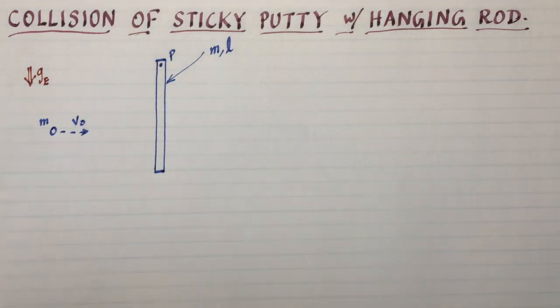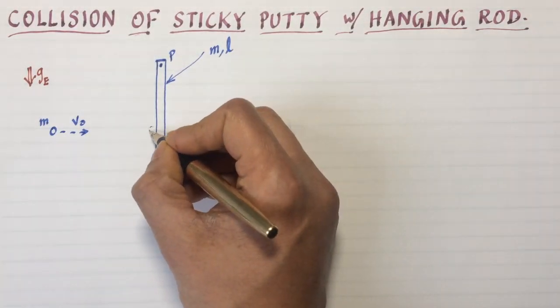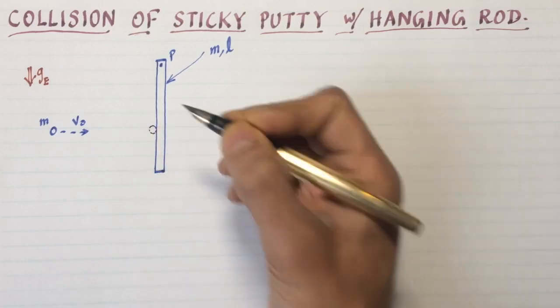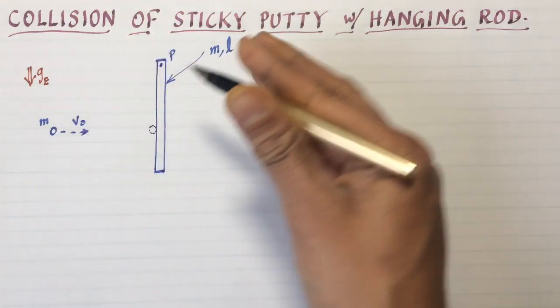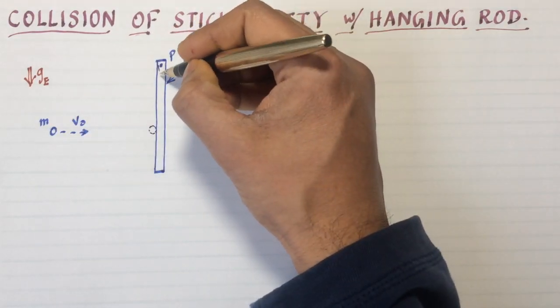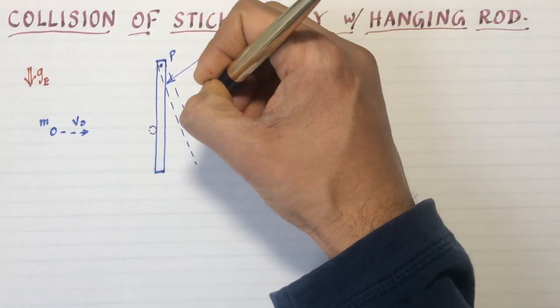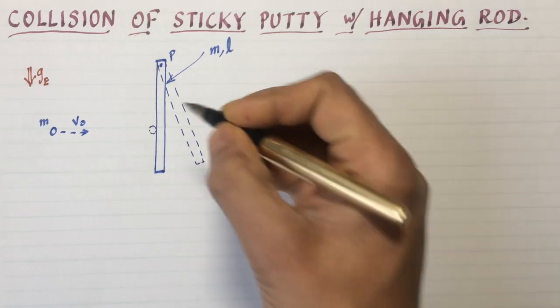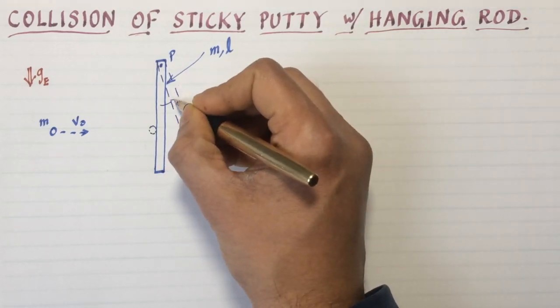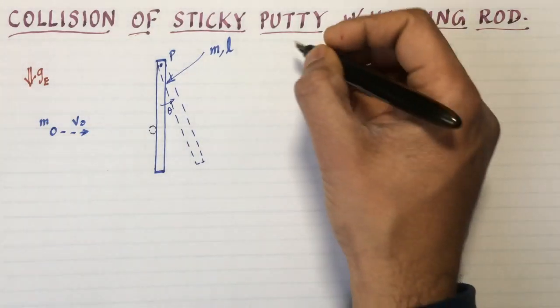The putty is a really small point mass, sticky in nature like a ball of clay, coming toward the rod with speed v-naught. This thing's going to come and stick to the rod and swing out to some angle at which point it will momentarily stop and then swing back down. So it's that final angle that we have to find.